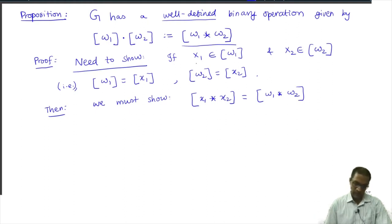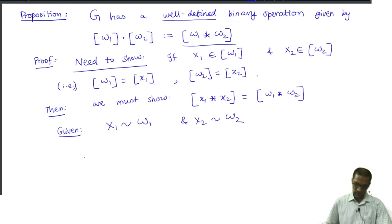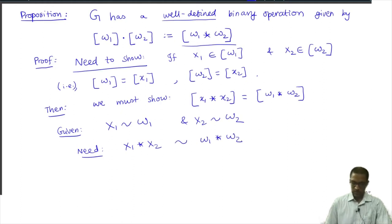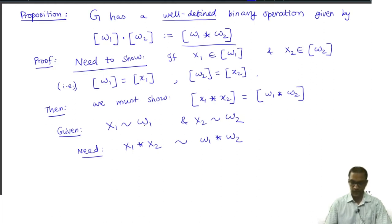Observe what are we given? We are given that x1 and W1 are equivalent to each other. Given what is given is the following: these two are equivalent, and what we need to prove is that the concatenations are equivalent — x1 star x2 is equivalent to W1 star W2. What does equivalent mean? It means there is a chain starting with W1 ending at x1 in which each intermediate step is obtained from the preceding one by an application of a basic rewriting rule.